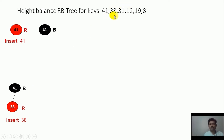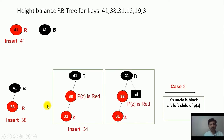Now we will insert key 31. Since 31 is smaller than 41, it will be placed at the left side, then compared again with 38. Since 31 is also smaller than 38, it will be placed at the left side of 38. This is our newly inserted node g, and we can see that the color of p of g is red, so all the cases will be applied.